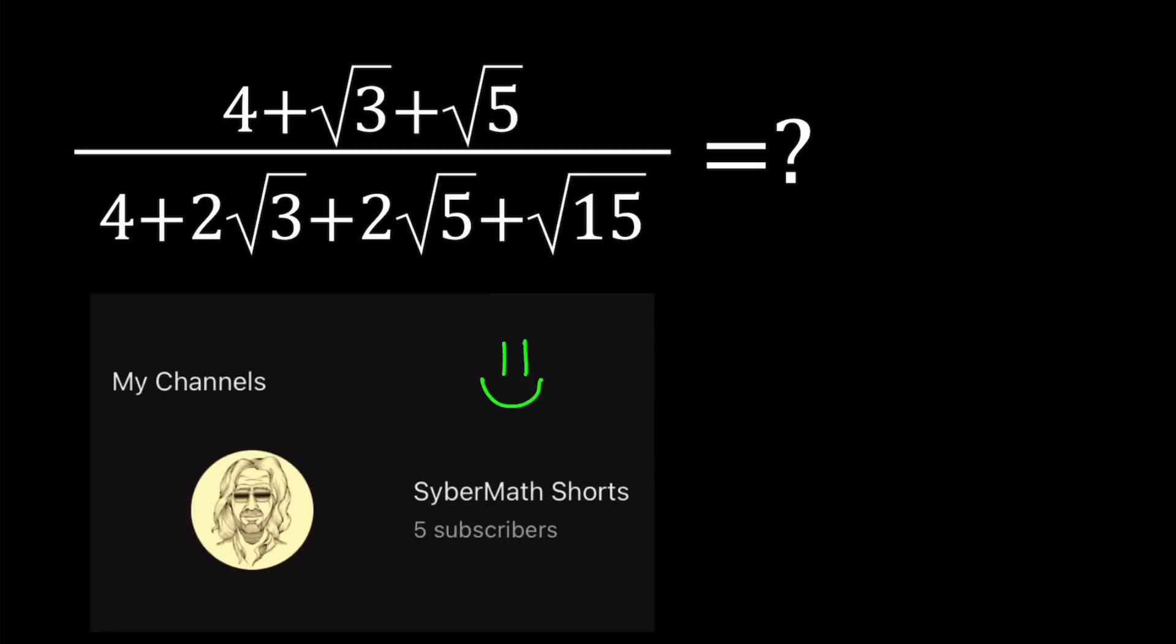And let's get started. We have a radical expression that we're going to simplify: 4 plus square root of 3 plus the square root of 5 divided by 4 plus 2 times the square root of 3 plus 2 times the square root of 5 plus the square root of 15. I'll be talking about two methods which I will present, and then I will also briefly mention a third method. Let's get started.